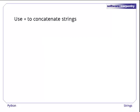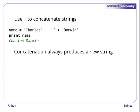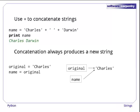But hang on a second. We've already seen that we can use plus to concatenate strings. For example, we can add the strings Charles, space, and Darwin to produce Charles Darwin. What happens is that concatenation always produces a new string. If the variable original refers to the string Charles, and the variable name refers to the same string, then when we add space Darwin to name, it actually creates a new string and assigns that to name, leaving original pointing at the original string. It does not modify the string Charles in place.